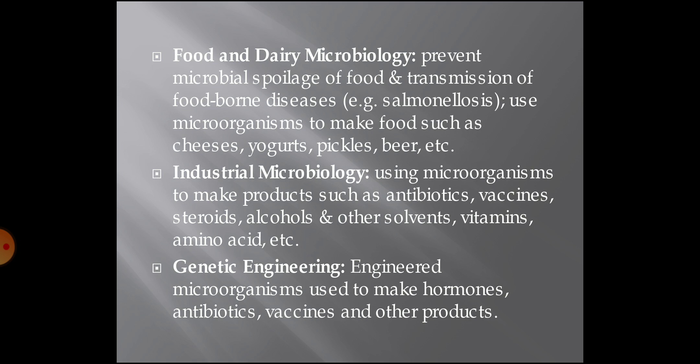Industrial microbiology involves using microorganisms to make products such as antibiotics, vaccines, steroids, alcohol, and other solvents, as well as vitamins, amino acids, etc. And the last area is genetic engineering, which engineers microorganisms used to make hormones, antibiotics, vaccines, and other products.